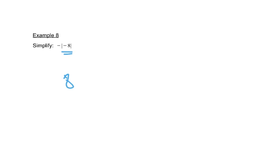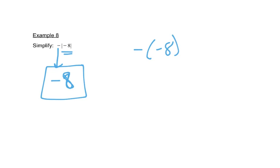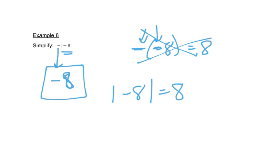In this problem, we're going to do the absolute value first. Remember, the absolute value means the distance from zero. So the absolute value of negative eight is eight, and then the negative that's out in front just gets copied out in front, so our answer is actually negative eight. Because this is absolute value bars — not parentheses — we have to do the absolute value first. The absolute value of negative eight is positive eight, and then the negative out in front gets copied, giving us negative eight.